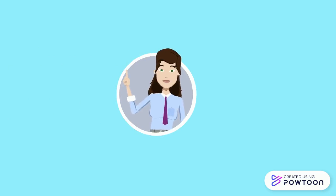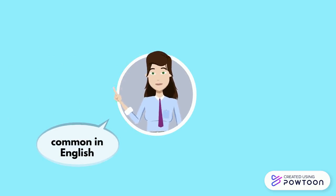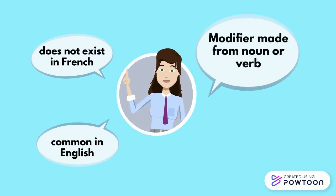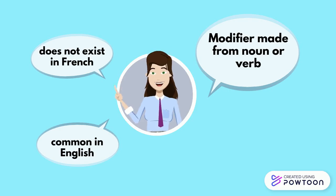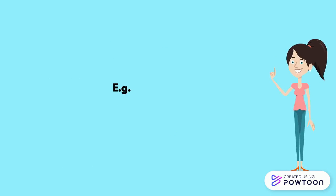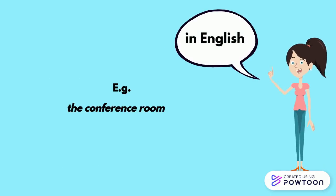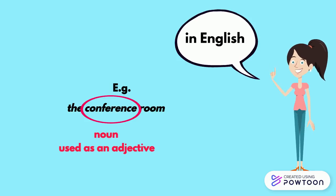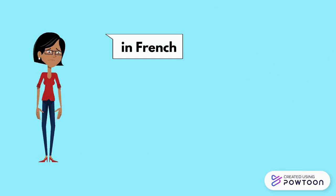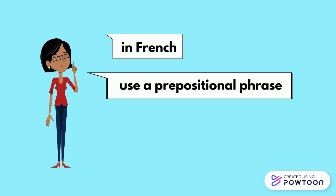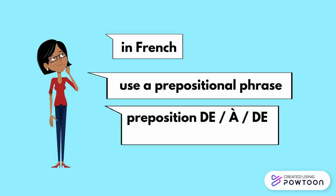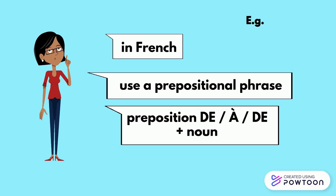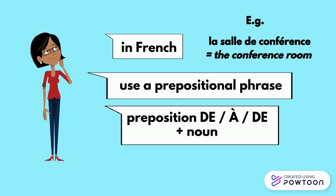Now, I would like to talk about something that is very common in English but that does not exist in French — when a modifier is made from a noun or a verb. For instance, in English you can say 'the conference room.' The word 'conference' is a noun, but here it is used as an adjective to describe the noun 'room.' This is not possible in French, so what you are going to do is use a prepositional phrase — the preposition DE or À or EN followed by a noun. For instance, the conference room is going to be la salle de conférence.